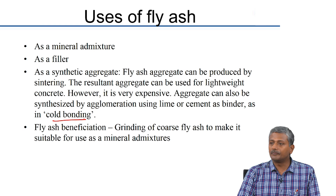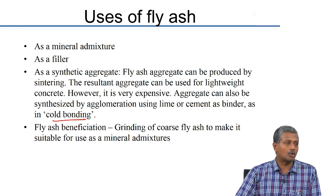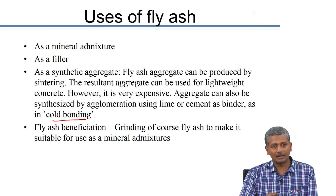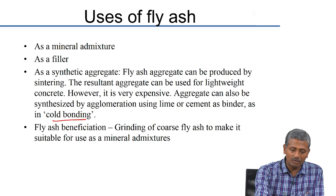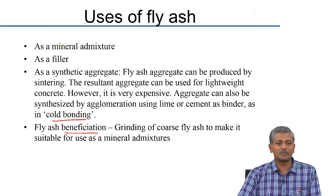The coarser fly ash that does not fly out is collected at the bottom of the boiler as bottom ash, and is ultimately mixed with other ash and dumped as pond ash. This coarser ash can also be ground much finer to make it more reactive or usable as a filler. That process is called fly ash beneficiation — additional processing of the material to ensure we get some useful performance characteristics out of it.